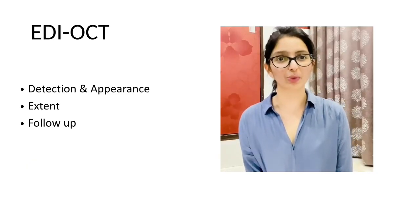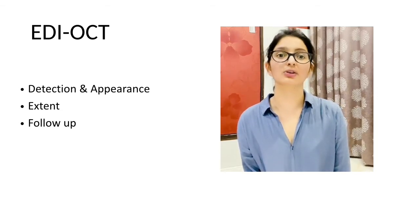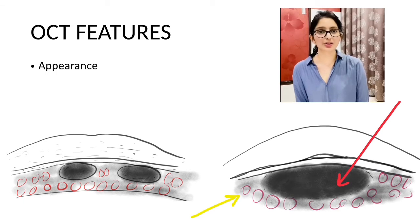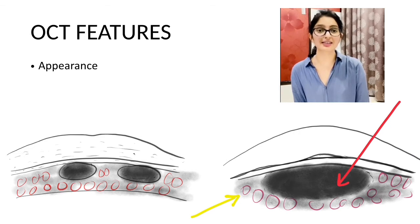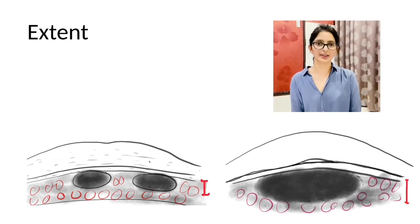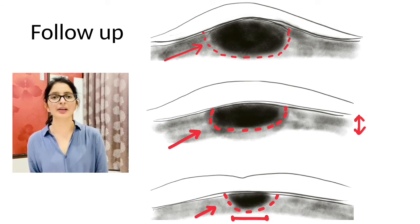OCT is one of the most important investigations to be done in such lesions. It will tell you about the appearance of the lesion, help you determine its extent, and help you monitor it. The lesion is usually deeply embedded in the choroidal stroma, hyper-reflective in nature with internal homogeneity, along with choriocapillaris compression. You can check whether it occupies partial or full thickness of the choroidal stroma. These choroidal granulomas initially decrease anterior-posteriorly and then the lateral extent begins to shrink.